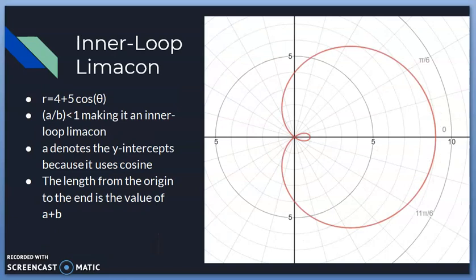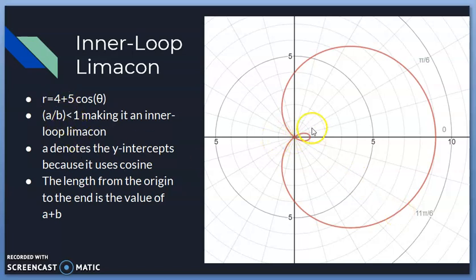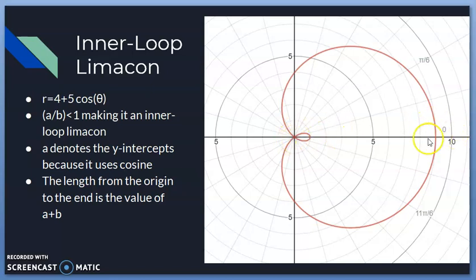Now we move into limaçons, starting with the inner loop limaçon. For r = 4 + 5·cosθ, a = 4 and b = 5; since 4/5 < 1, it creates an inner loop. Because it uses cosine, a denotes the y-intercepts — the y-intercept is at 4. The length from the origin to the far end equals a + b = 9. It's symmetrical to the x-axis because it uses cosine.